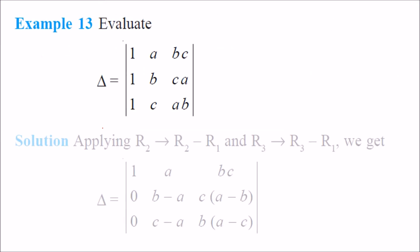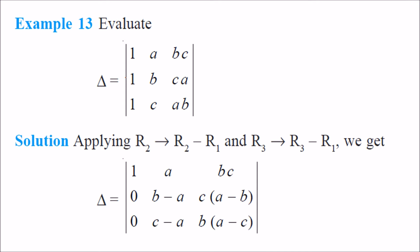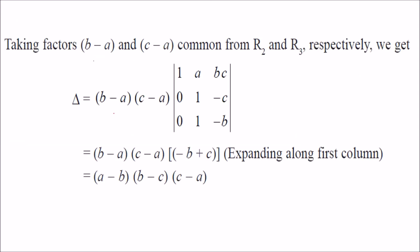Evaluate the next determinant. To get maximum zeros, apply R2 → R2 − R1 and R3 → R3 − R1, giving zeros in those positions. Then factor out (b−a) and (c−a) as common factors. Expanding using the first row and simplifying gives the final result.